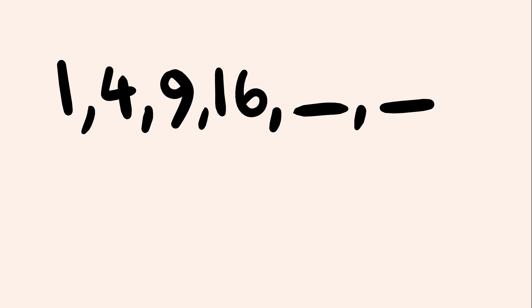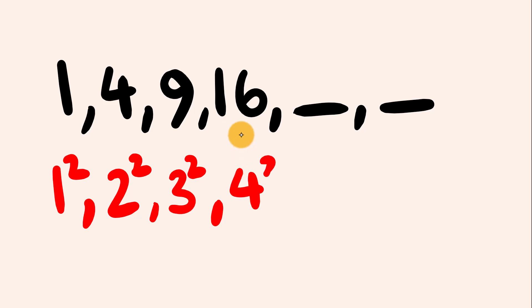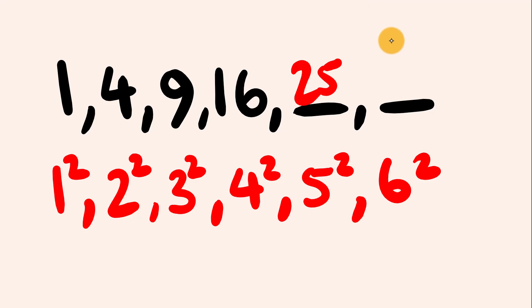We are not adding, subtracting, multiplying, or dividing to get to the next term. Instead, something else is happening: 1 is 1 squared (1×1), 4 is 2 squared (2×2), 9 is 3 squared (3×3), and 16 is 4 squared. That means the next term is 5 squared and the term after is 6 squared. 5 squared is 25, and 6 squared is 36.